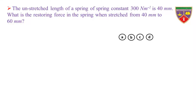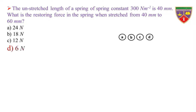The unstretched length of a spring of spring constant 300 N/m is 40 mm. What is the restoring force in the spring when stretched from 40 mm to 60 mm? Option A: 24 N. Option B: 18 N. Option C: 12 N. Option D: 6 N. The key is 6 N. Therefore, the correct option is D.